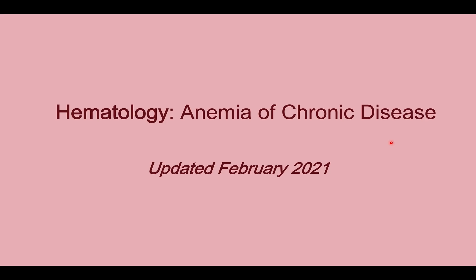This talk covers anemia of chronic disease. It gets its own special talk because anemia of chronic disease can manifest either as a microcytic anemia with an MCV below 80 or as a normocytic anemia, typically in the 80s. It is often a normocytic anemia but with a very low MCV compared to other normocytic anemias like bone marrow failure, blood loss, or hemolysis. This talk will serve as a bridge between microcytic and normocytic anemias.